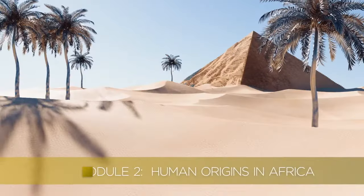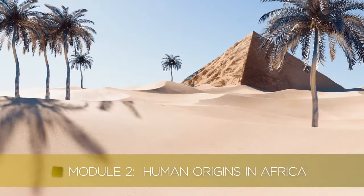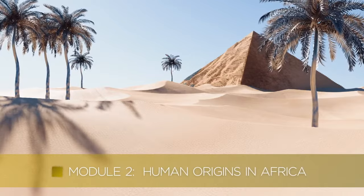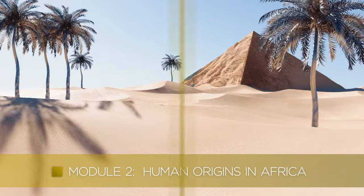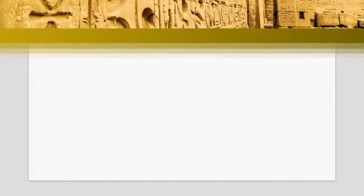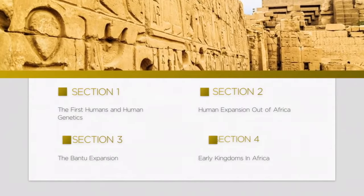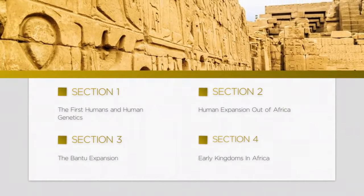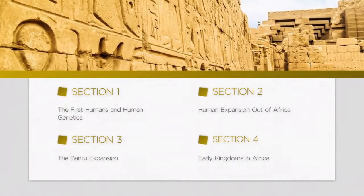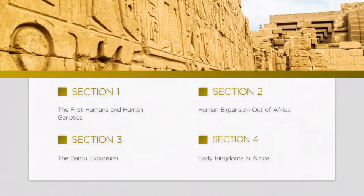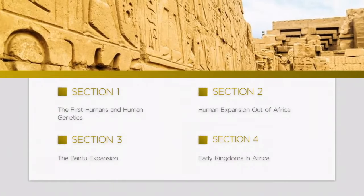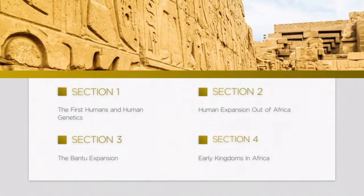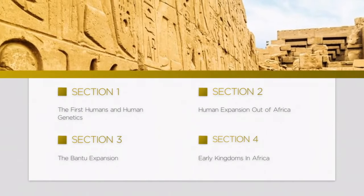Module 2: Human Origins in Africa. This module is divided into four sections. Within this module, we will learn about the first human beings and human genetics, the human expansion out of Africa, the Bantu expansion, and the early kingdoms in Africa.